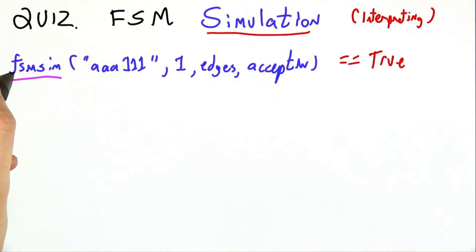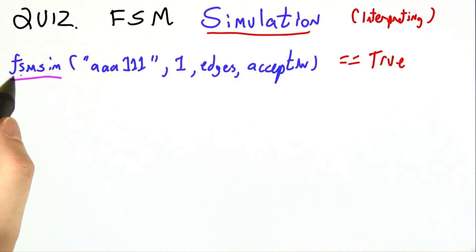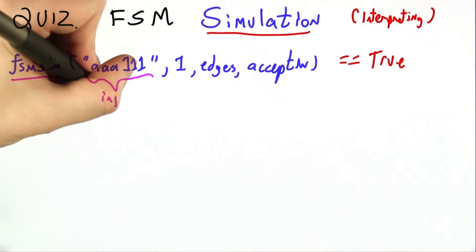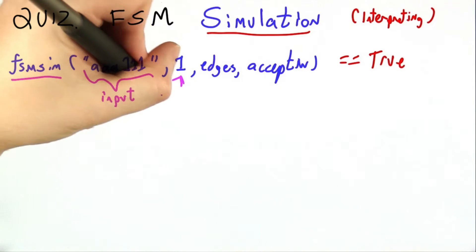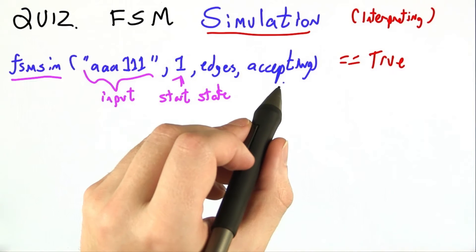So together, we're going to write a procedure called fsmsim, for FSM simulation, finite state machine simulator. You pass in the input string, the start state or the current state, the edges, and the accepting states.